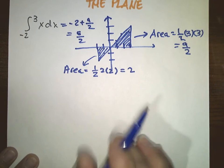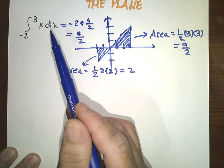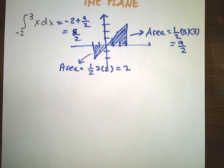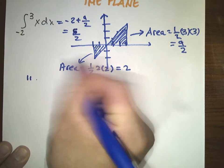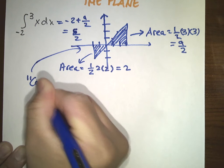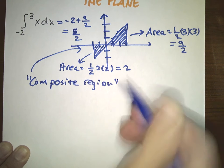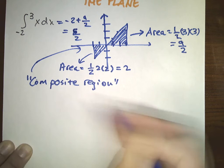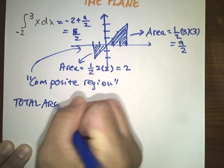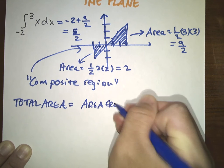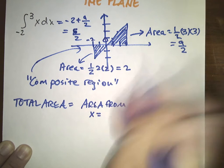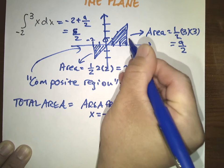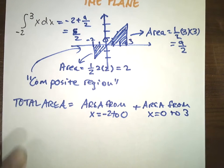But if you wanted the area and not the integral, then you would do this a little bit differently. This is actually called a composite region, because if you wanted to find the area of the whole region, you would have to find the area of this plus the area of this. The total area would be the area from x = -2 over to 0, the part that's below the curve, and then plus the area from 0 over to 3, the part that's above the curve.